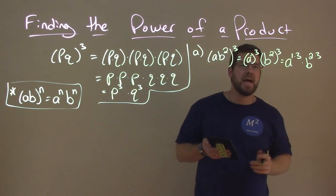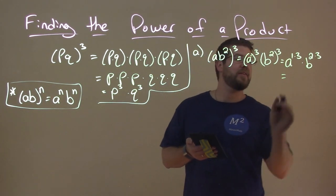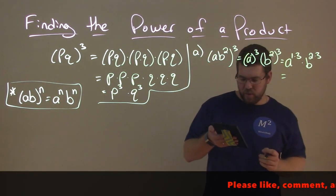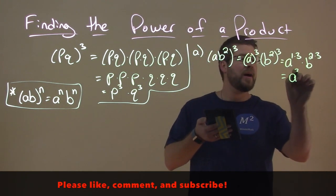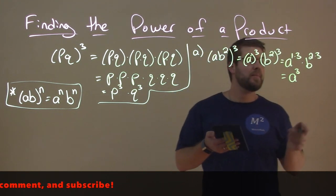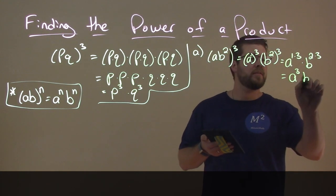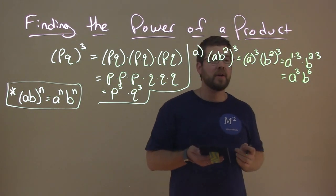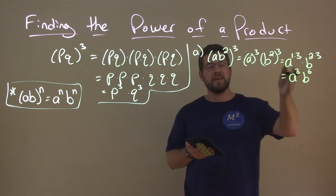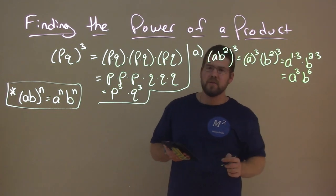And that just simplifies. Well, 1 times 3 is 3, so we have a to the third power. And then 2 times 3 is 6, so it's b to the sixth power. And then we have our answer, a to the third times b to the sixth. So let's try another problem.